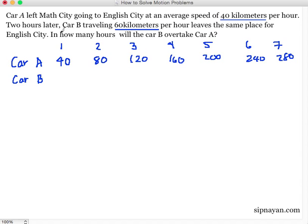And then after 2 hours. So sa unang oras natin, wala pang na-travel yung Car B. Kasi after 2 hours pa siya. After 2 hours, sa pangalawang oras, wala pa din. Dito na siya mag-start. After 2 hours, dito pa lang siya mag-start mag-travel. So on the 3rd hour, ilan na yung na-travel niya? 60.